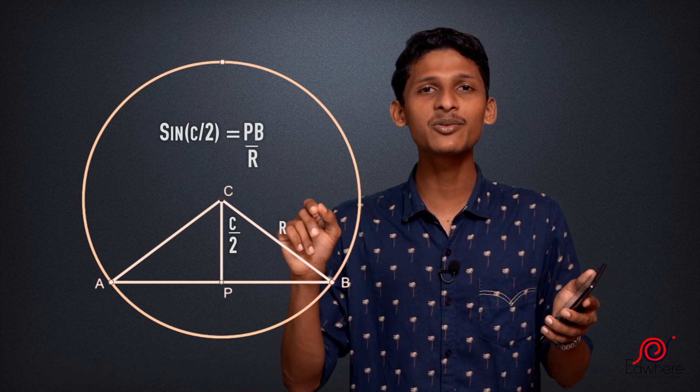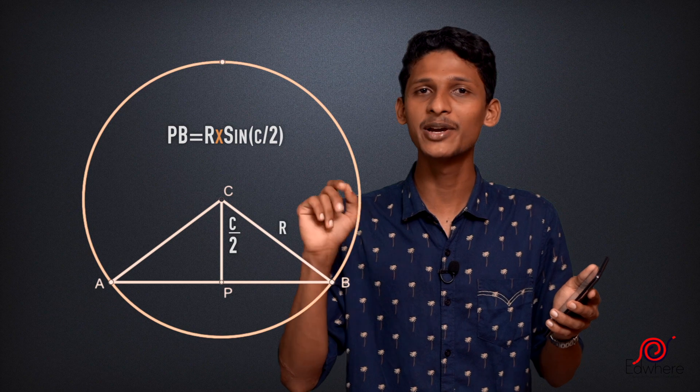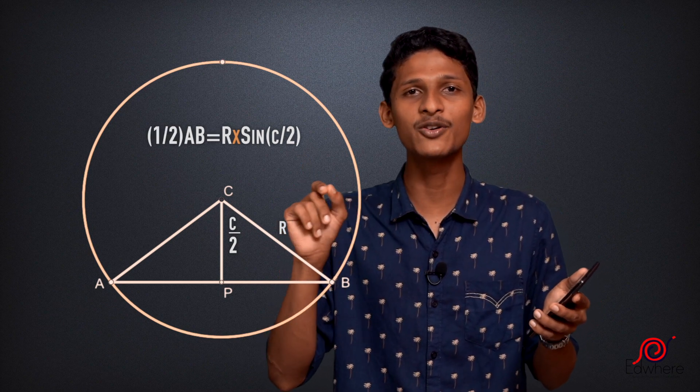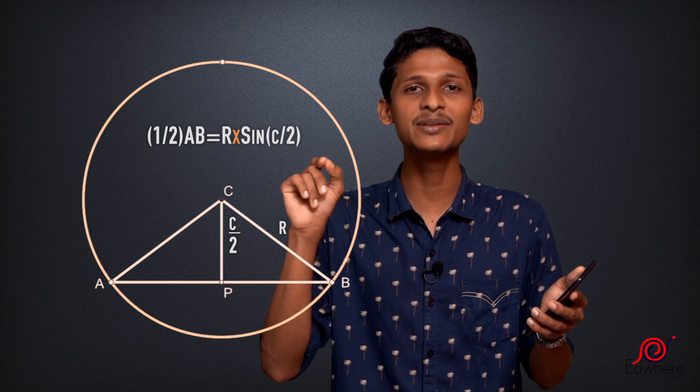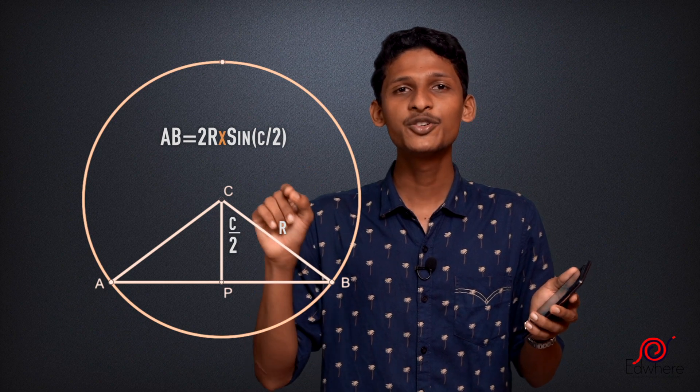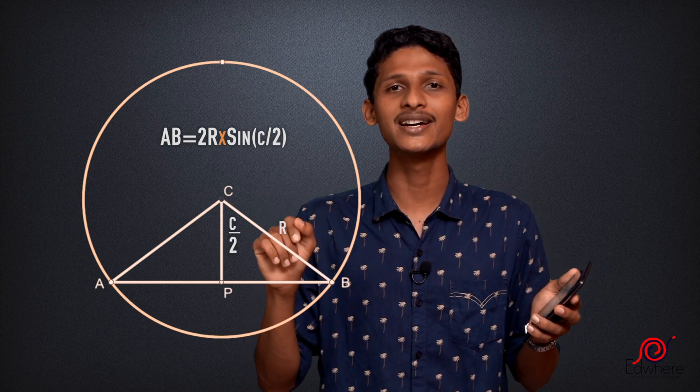Now we have PB as R sine C by 2. This PB is half AB, so half AB equals R sine C by 2. Now we cross-multiply, then AB equals 2R sine C by 2. That's it.